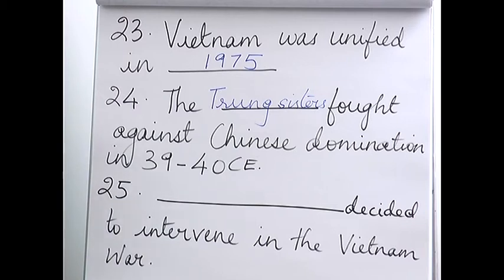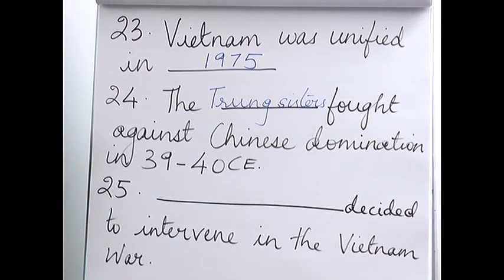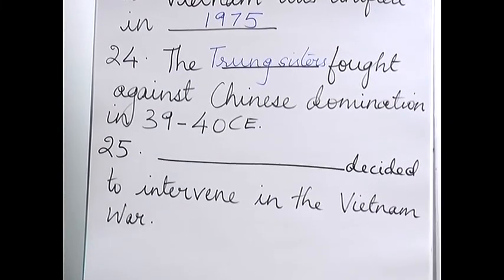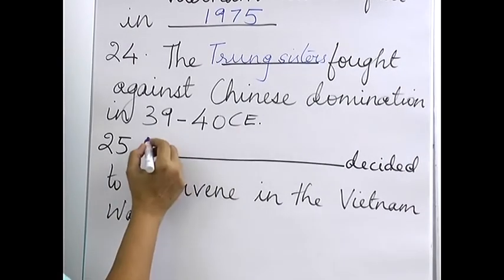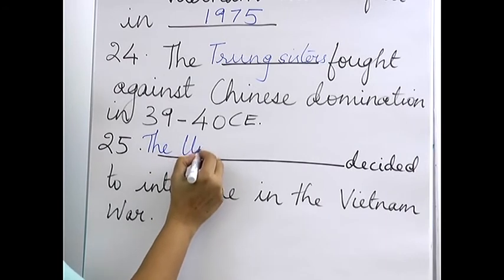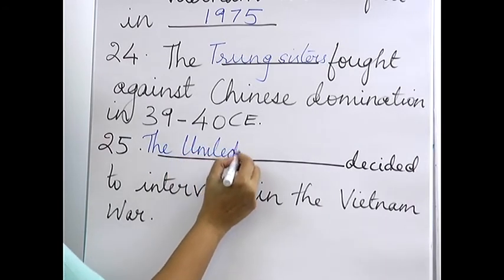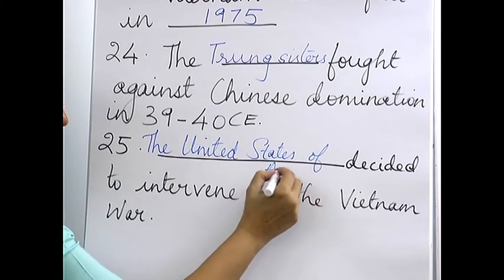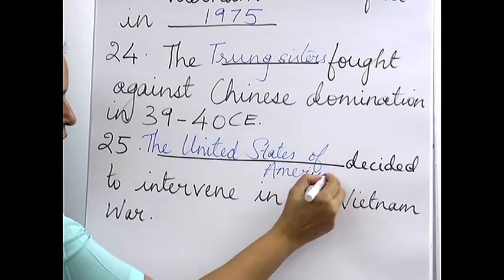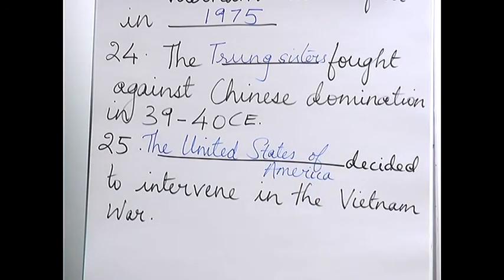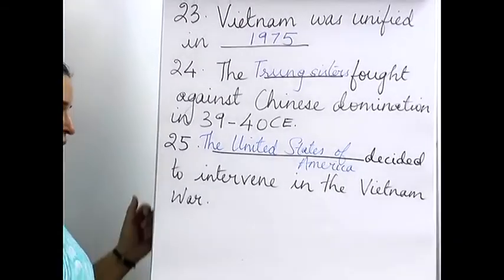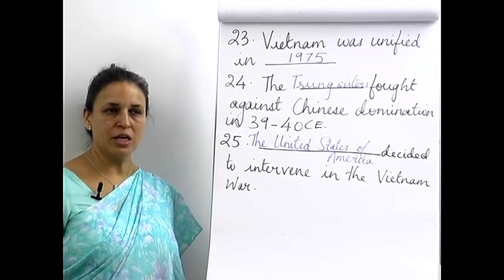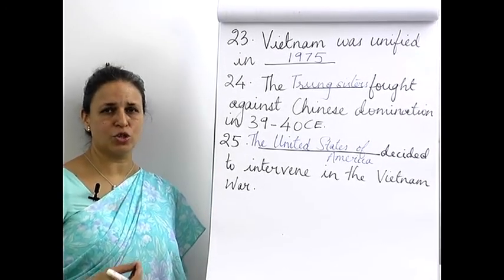Twenty-fifth: the USA — the United States of America — decided to intervene in the Vietnam War between North and South Vietnam. So for all these fill-in-the-blank style questions, which can also come as match the columns or one-line answers, you should get your full marks.